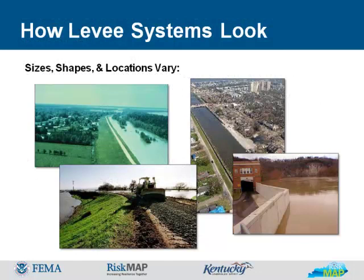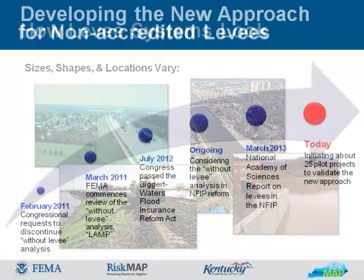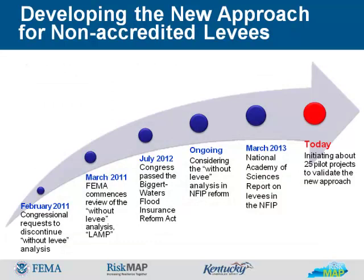As you can see in these photos, levy systems look different because they are built and designed differently based on how they are being used, site constraints, material availability, and other factors. This slide displays a timeline of developing the new approach for non-accredited levies. In February 2011, members from both the House of Representatives and the Senate wrote letters requesting that FEMA discontinue the without levy approach for analyzing levy systems when those levy systems do not fully comply with the NFIP regulatory requirements cited at 44 CFR 6510.